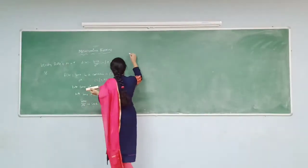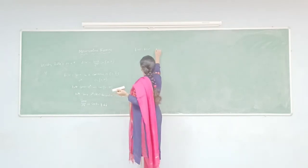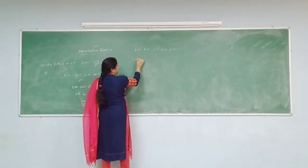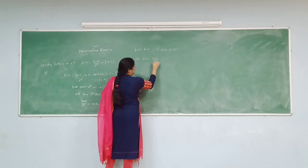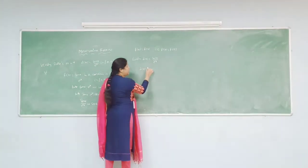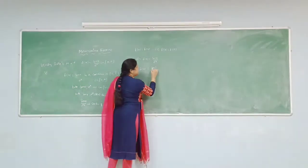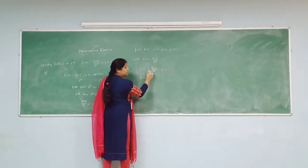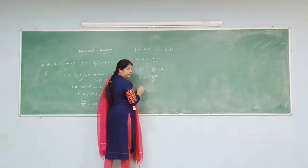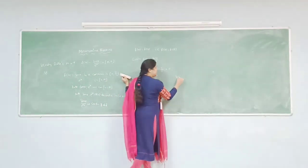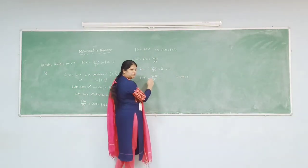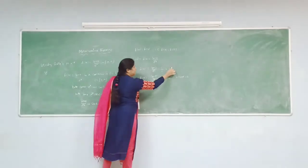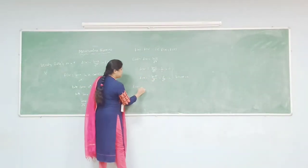Now go for the third condition of Rolle's mean value theorem: f(a) = f(b), that is f(0) = f(π). The given function is f(x) = sin(x) / e^x. So f(0) = sin(0) / e^0 = 0/1 = 0. And f(π) = sin(π) / e^π. Since sin(nπ) = 0, sin(π) = 0, so f(π) = 0/e^π = 0. Therefore f(0) = f(π), and the third condition is satisfied.